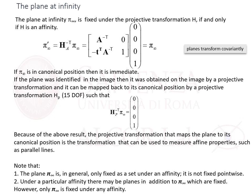This is because the plane at infinity is fixed under the projective transformation H if and only if H is an affinity. Since planes transform co-variantly, given the affine transformation H, it has to be transposed and inverted. The obtained matrix has a known form, as we have already seen for the line. It is easy to see that if the plane at infinity is in its canonical form, then from this 3x4 sub-matrix we obtain the three zeros, and from this vector we obtain the one.